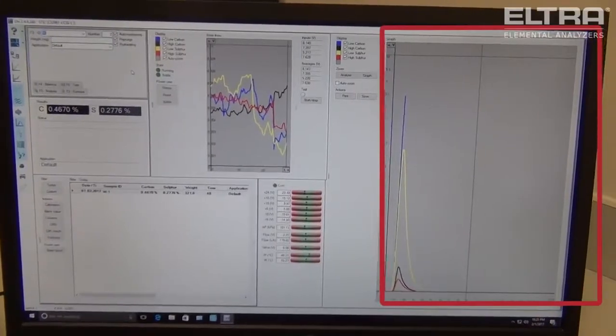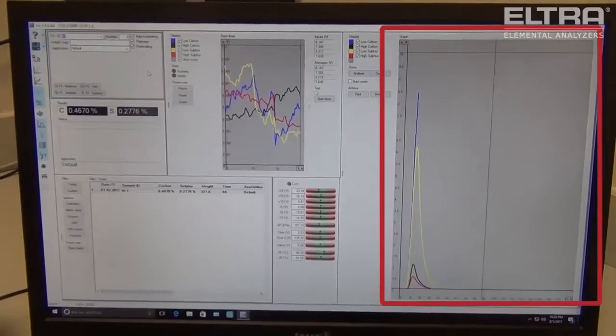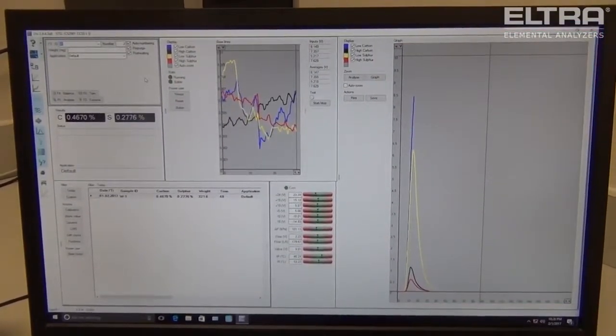For the sulfur, we have the low sulfur channel, which is in yellow, and the high sulfur channel, which is in red. The sample is now done analyzing.